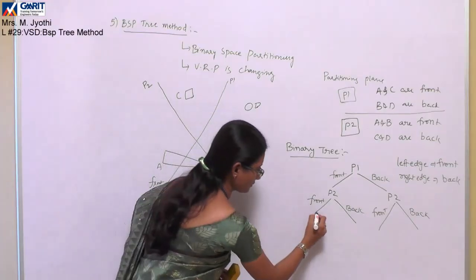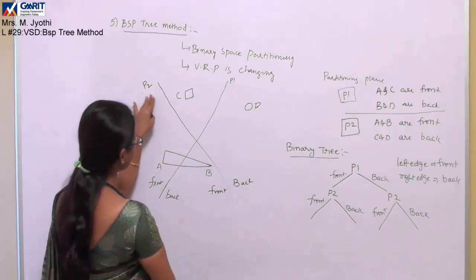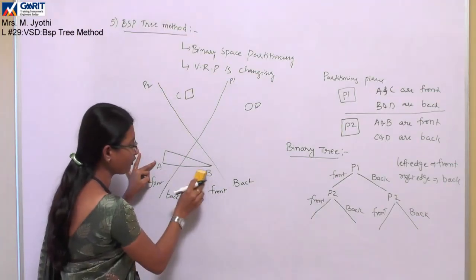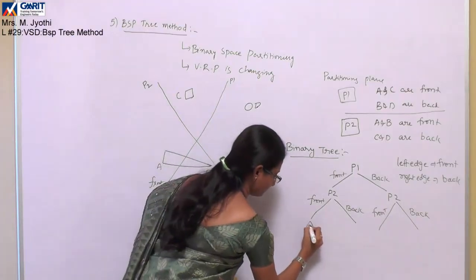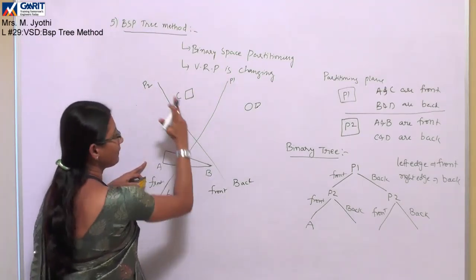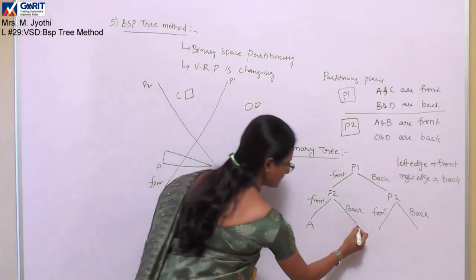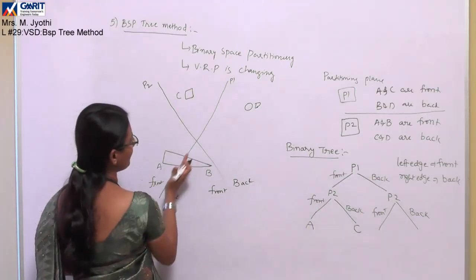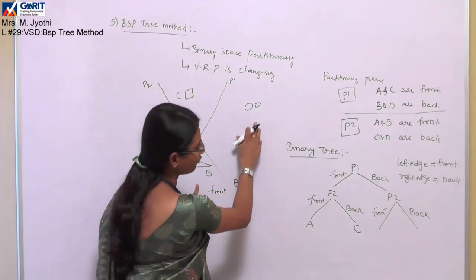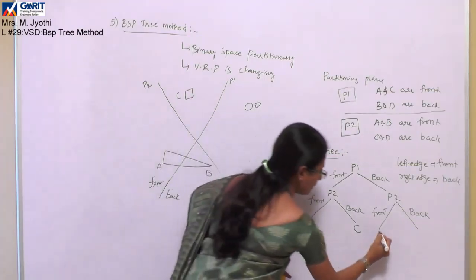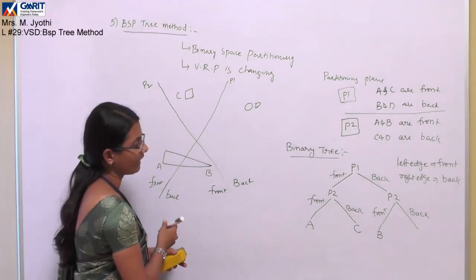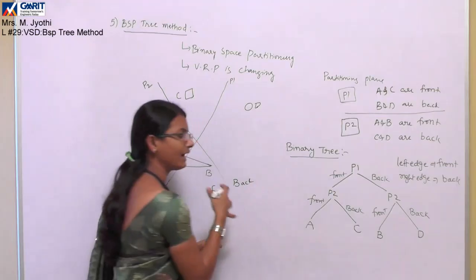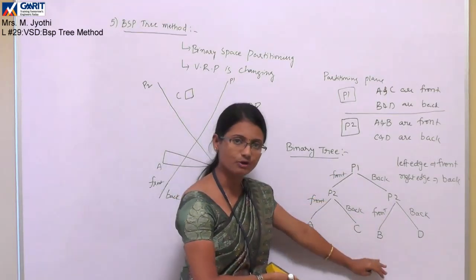Now we fill in the leaf nodes. P1 front and P2 front share common object A. P1 front and P2 back share common object C. P1 back and P2 front share common object B. P1 back and P2 back share common object D. The terminating leaf nodes always specify the objects present in that partition.